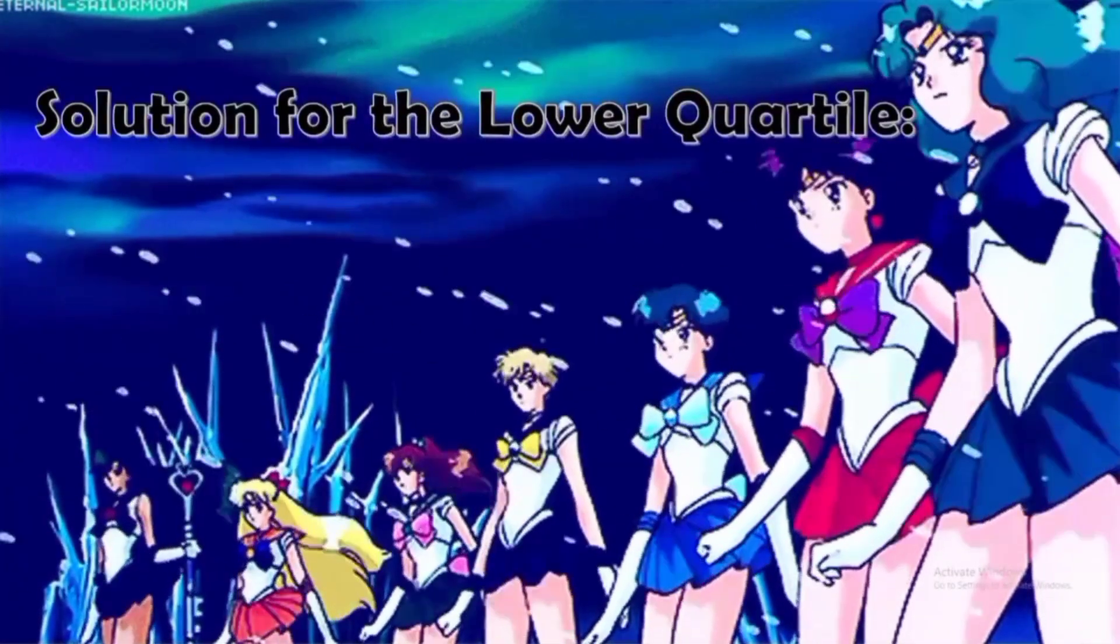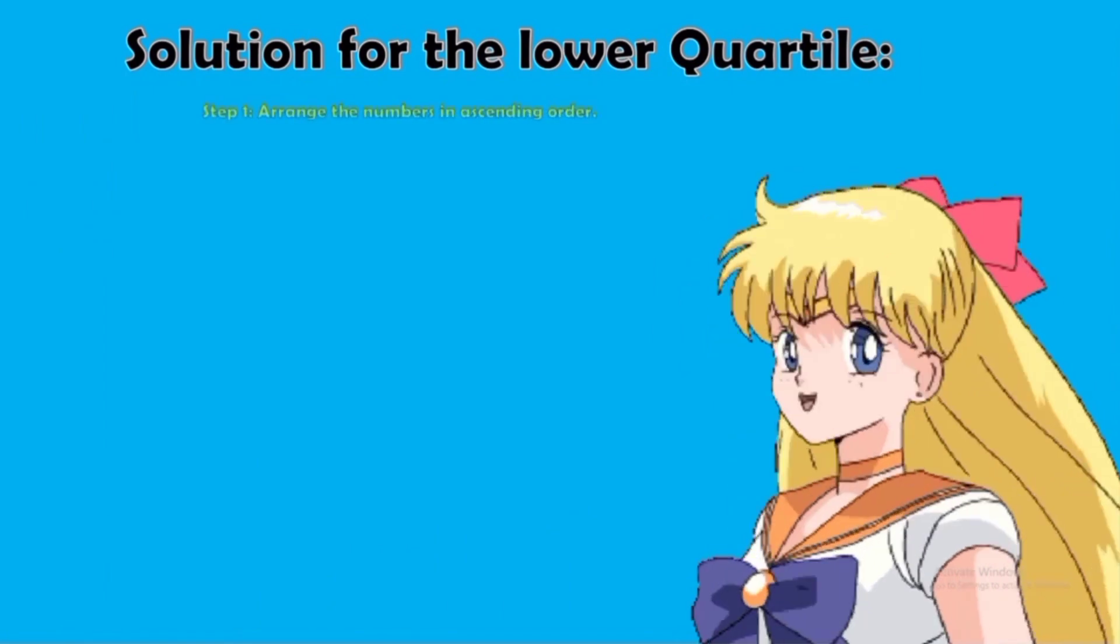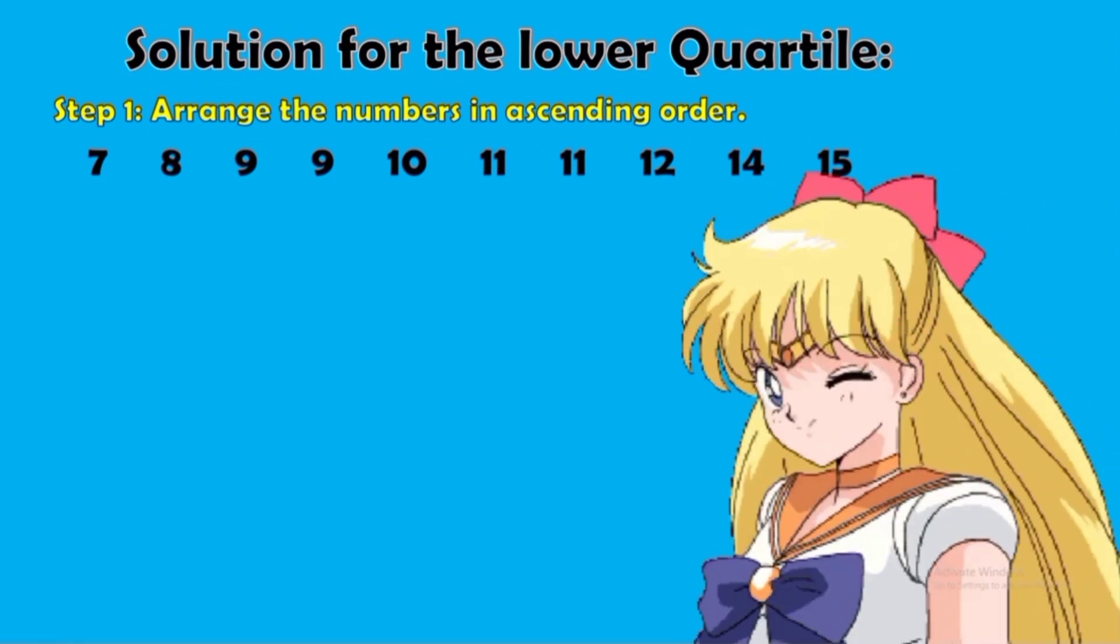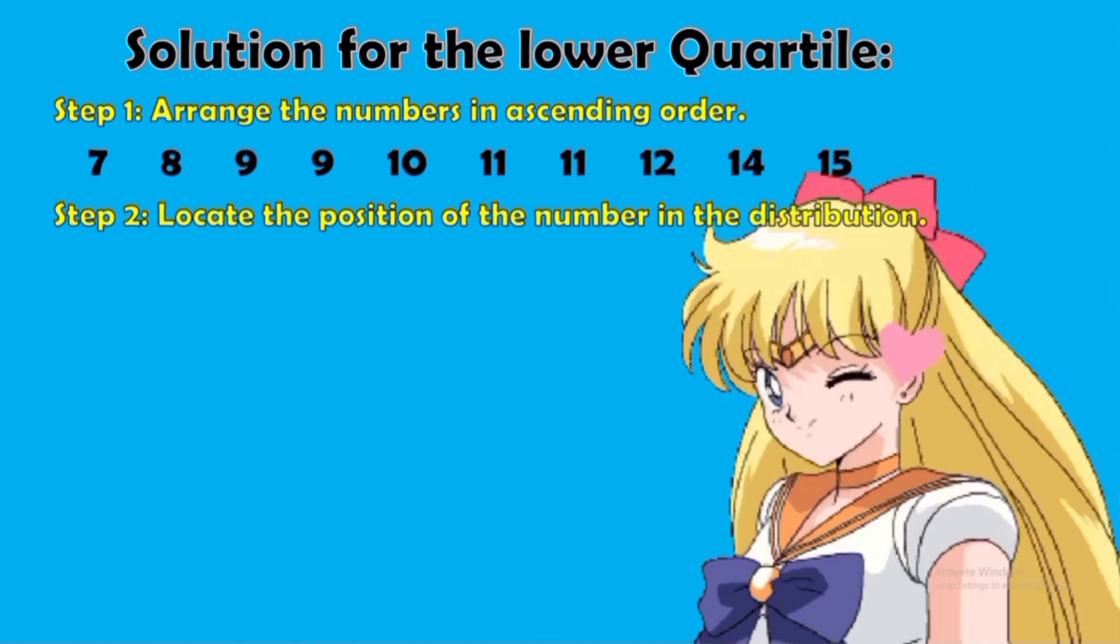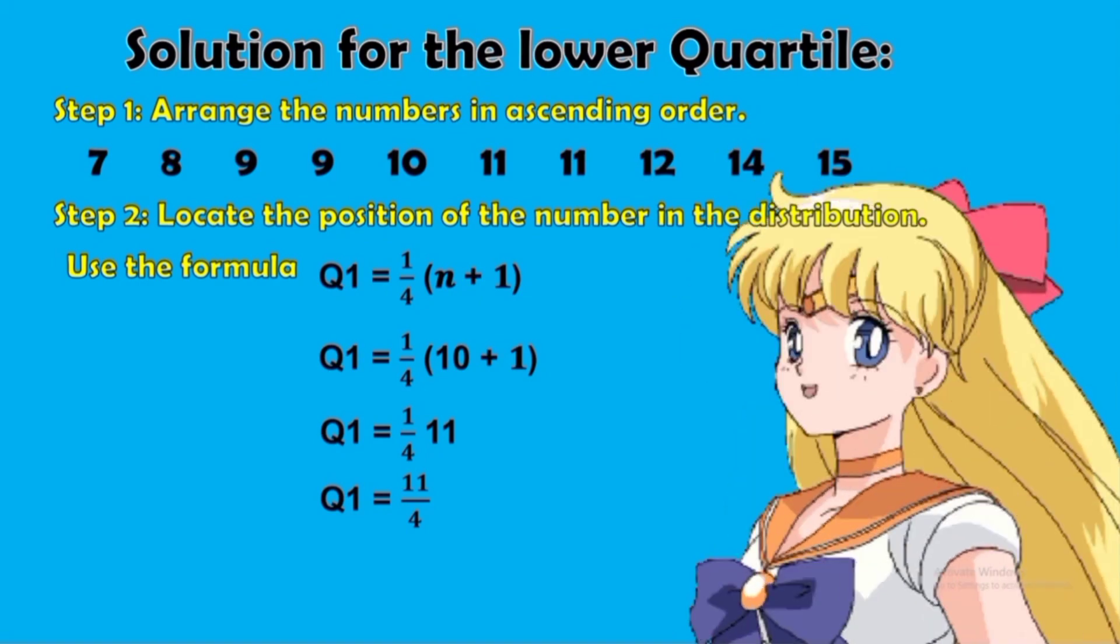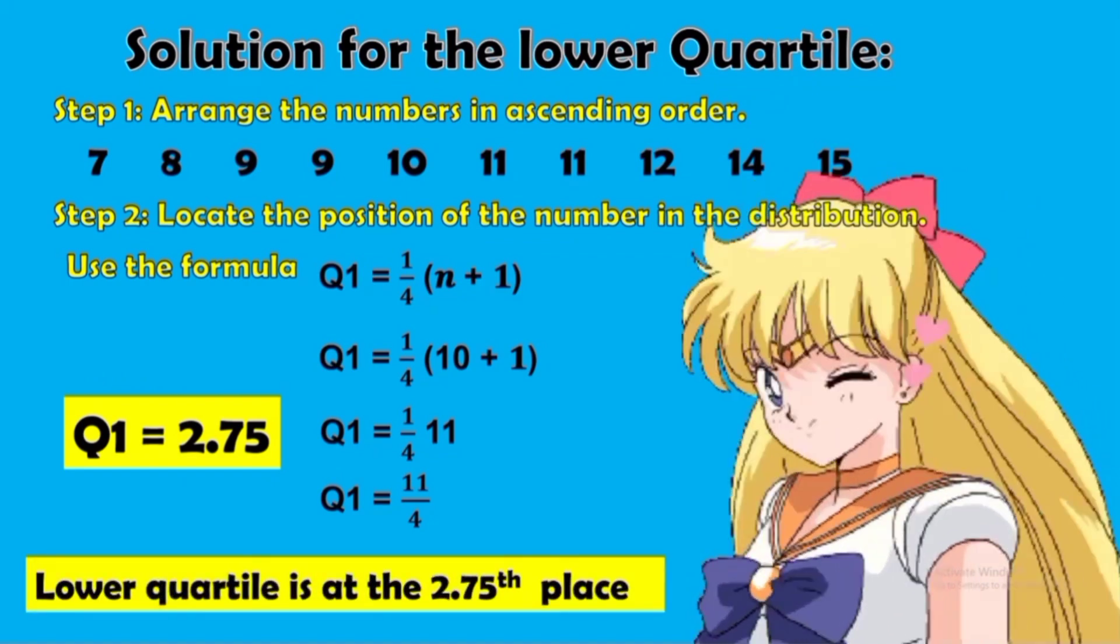Solution for the Lower Quartile. Step 1: Arrange the numbers in ascending order. We have 7, 8, 9, 9, 10, 11, 11, 12, 14, and 15. Step 2: Locate the position of the number in the distribution. Now, use the formula. Use the formula to find the first quartile. First, distribute the number of data. That is 10. 10 plus 1 is equal to 11. Then, we'll multiply 1 fourth and 11. After dividing 11 by 4, we have 2.75. Therefore, our lower quartile is at the 2.75 place.